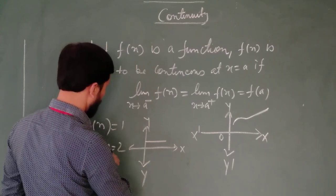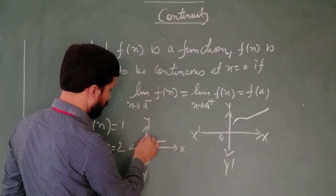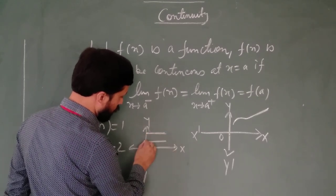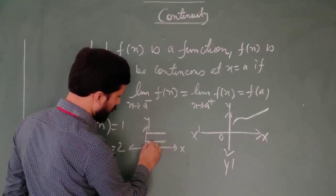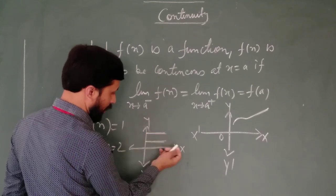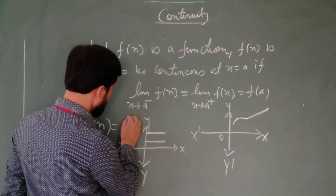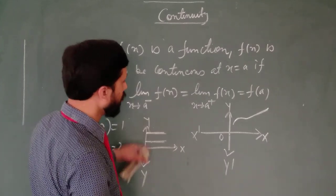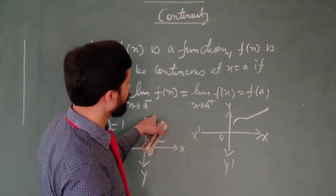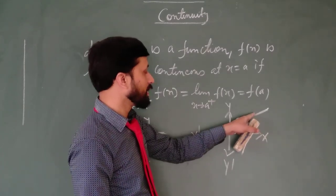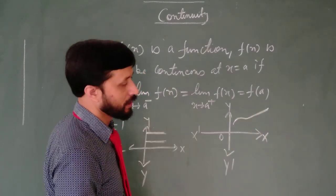When f(x) equal to 2, that is y equal to 2, the point will come here. So in order to draw these two points, we have to lift our pen or chalk. So this function is not a continuous function. In another way you can understand, if we have to lift our pen to make a graph, then that type of function is not continuous.